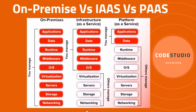The service provider provides you the servers, storage, and networking — all these infrastructures are maintained by them. Once we subscribe to this service, on top of this infrastructure we have to start installing the OS and all required resources to run our application and data. In Infrastructure as a Service, the responsibility of the infrastructure is taken care of by the service provider, whereas these resources are managed and maintained by us.